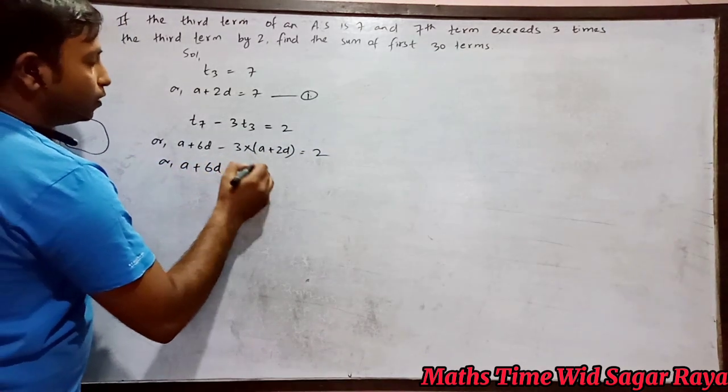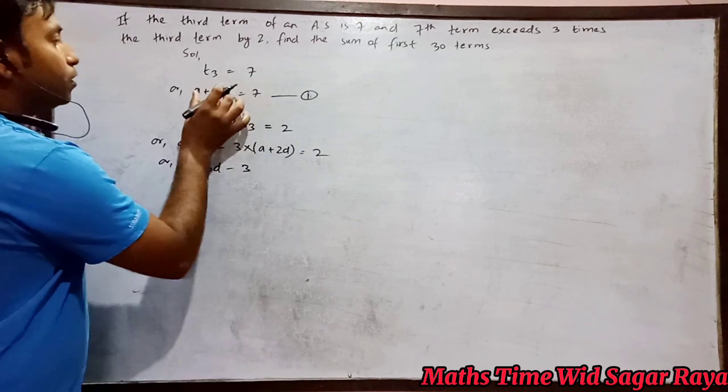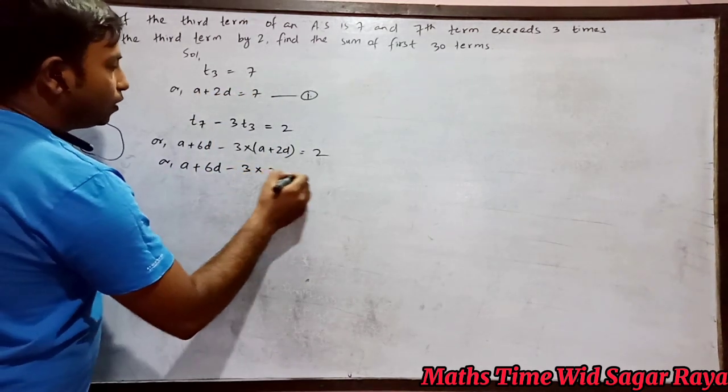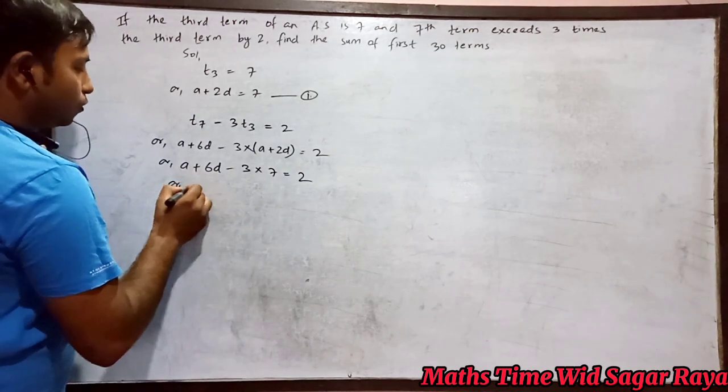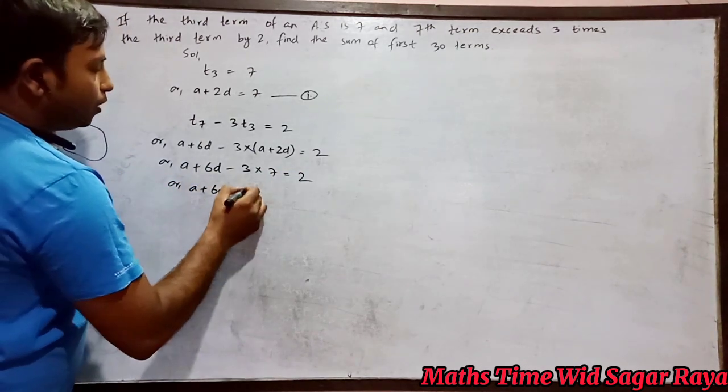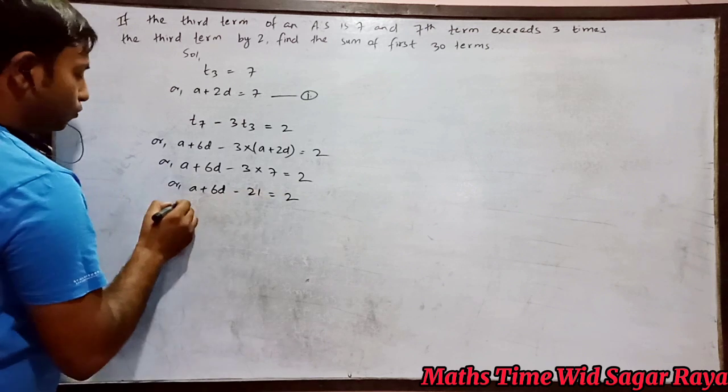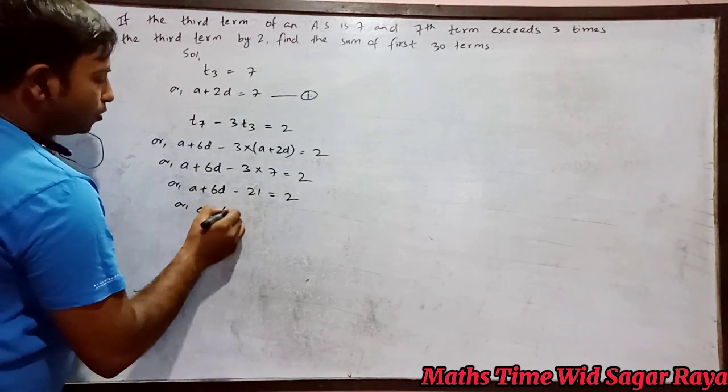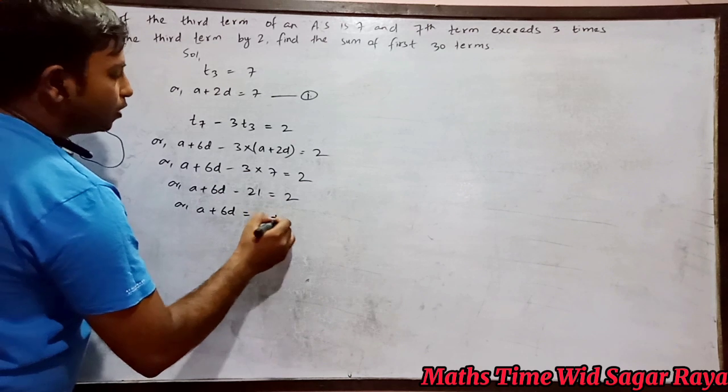So a plus 6d minus (a plus 2d). Instead of a plus 2d we can write 7, equals 2. So a plus 6d minus 21 equals 2. Or a plus 6d equals 2, and minus 21 this side it will be plus 21.